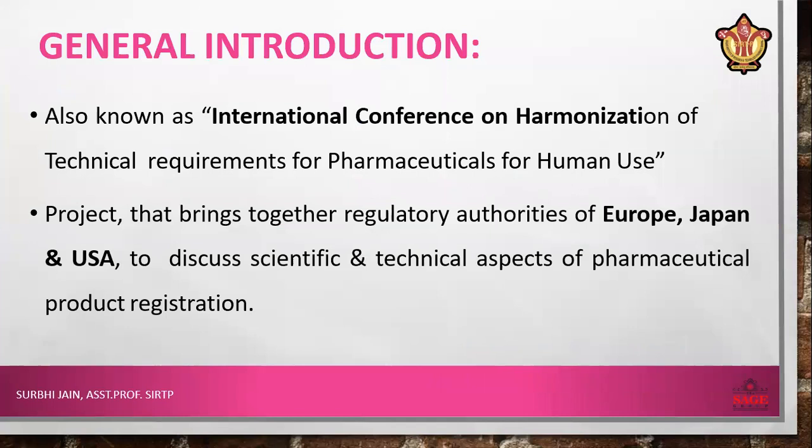What is ICH? It stands for International Conference on Harmonization. It is a project or conference that brings together the regulatory authorities of Europe, Japan, and USA to discuss scientific and technical aspects of pharmaceutical product registration. Basically, ICH is a conference established by the contribution of three countries — Europe, Japan, and USA — to discuss various technical and scientific aspects for new drug product approval or registration.